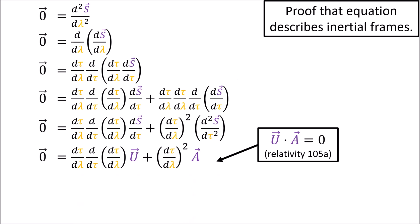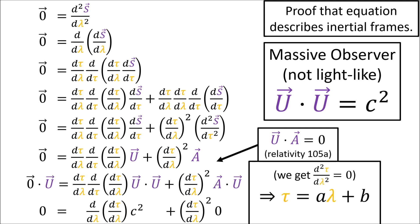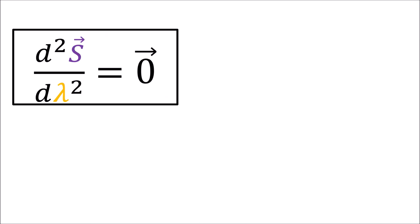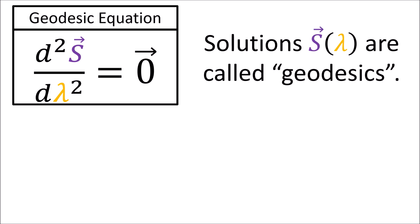Also, remember that for any massive observer, their four-velocity u dotted with itself equals the speed of light squared. We can use this fact to prove that the proper time tau is a linear function of the path parameter lambda, which is sometimes called the affine parameter. So the equation where the second derivative of four-position s with respect to a path parameter lambda equals the zero vector is called the geodesic equation. The world lines that satisfy the geodesic equation are called geodesics.